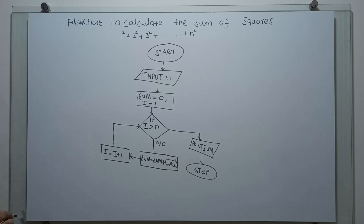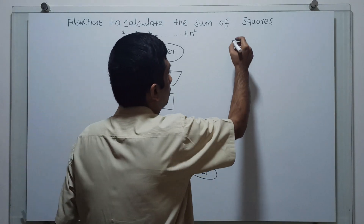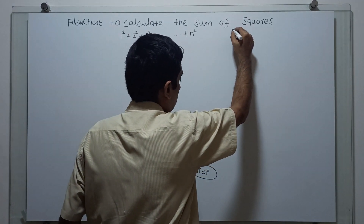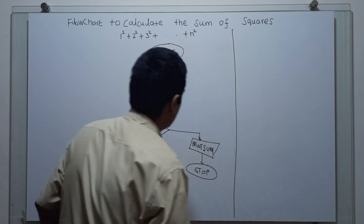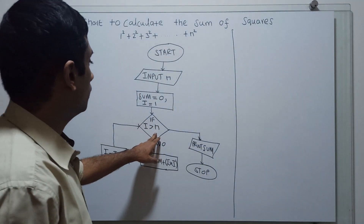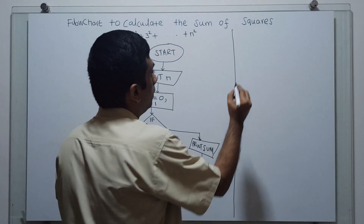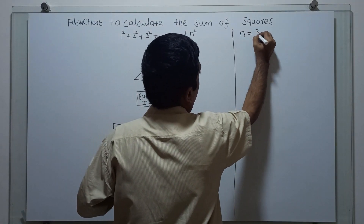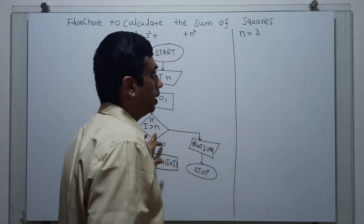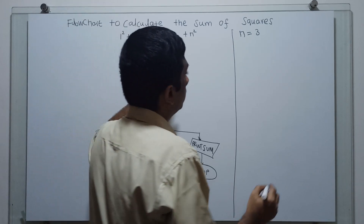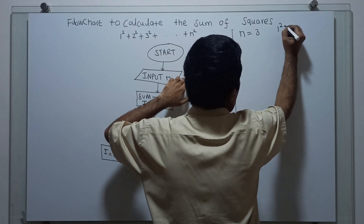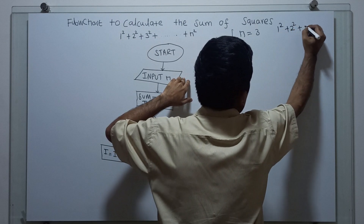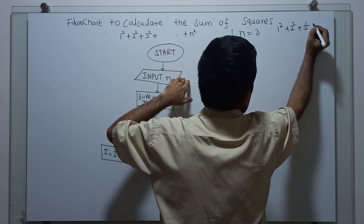We will trace how the flowchart works. For input n, I am giving the value n equal to 3. So this will actually calculate 1 square plus 2 square plus 3 square.